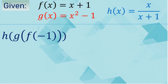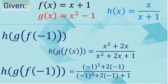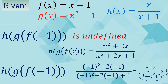Let us solve h of g of f of negative 1. We can use the function we just solved. Substituting negative 1: squaring negative 1 gives 1, and 2 times negative 1 is negative 2. In the denominator, squaring negative 1 gives 1, 2 times negative 1 is negative 2, plus 1. Observing the denominator, it will become 0. Because the denominator is equal to 0 and the numerator is negative 1, the answer is undefined. It should not happen that the denominator is 0, so the function has no value.